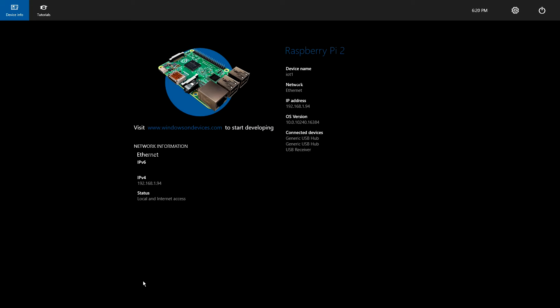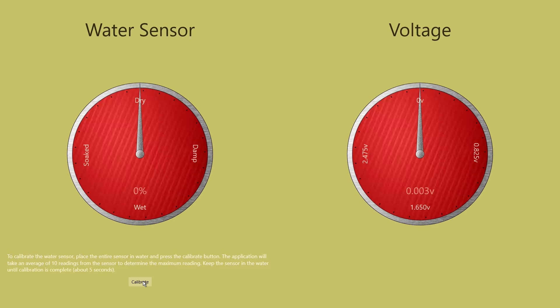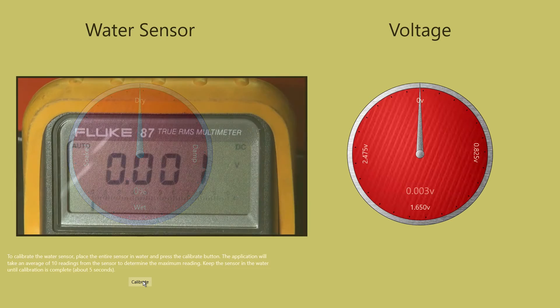I'll now press F5 to start the application. Here on the main view, we have two meters, one to show the reading from the water sensor and the other to show the voltage when I vary the potentiometer.